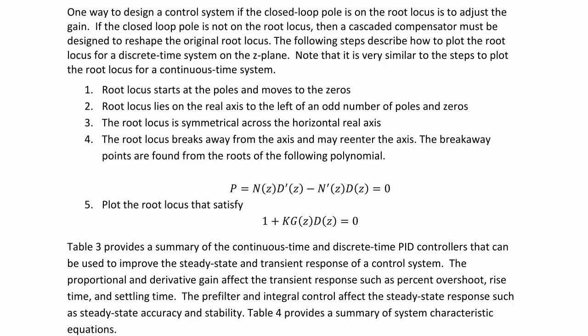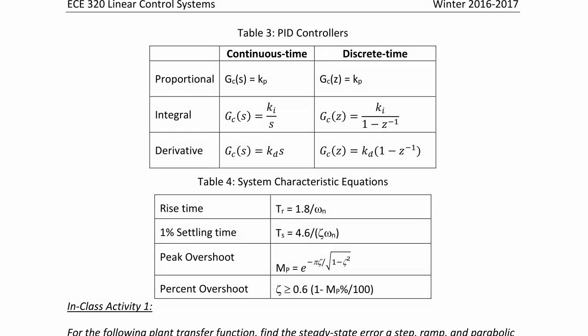Table 4 provides a summary of the system characteristic equations. In Table 3, comparing continuous time and discrete time PID controllers — we can combine these as PI, PD, or PID controllers. GC(s) equals KP and GC(Z) also equals KP for proportional. For integral, GC(s) is KI/s, but in discrete time it is KI over (1 minus Z⁻¹). For derivative, GC(s) is KD·s for continuous time and KD times (1 minus Z⁻¹) for discrete time.